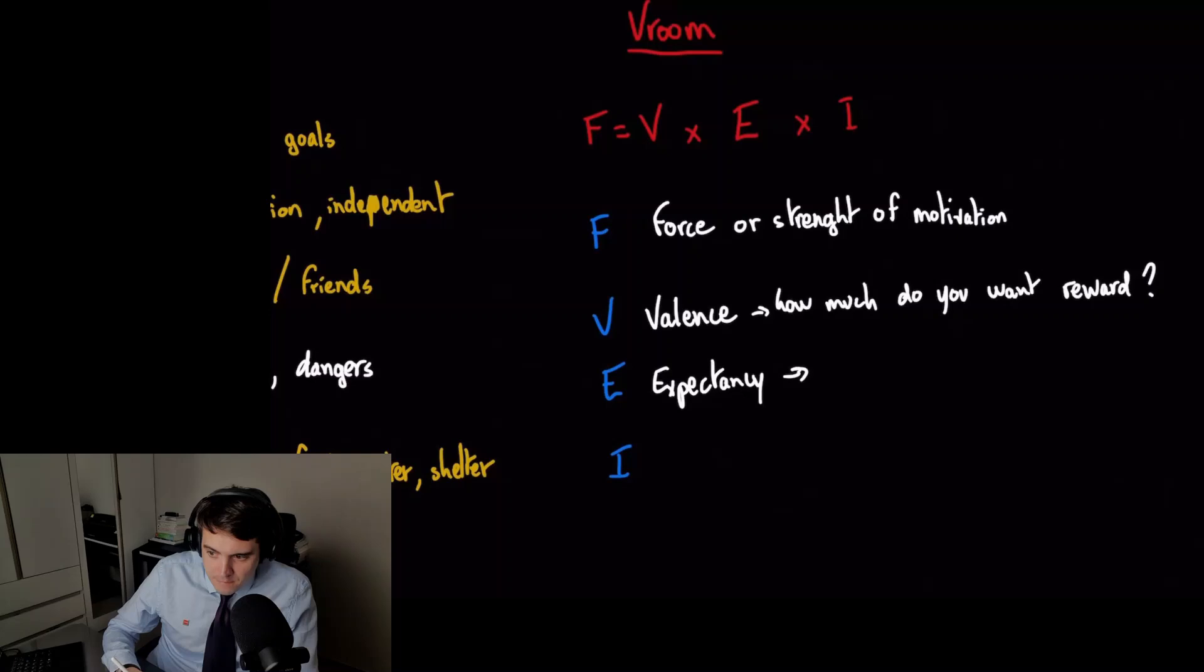So expectancy is like the level of expectation. If you make a lot of sales for the company, you're going to get one million dollars as a bonus. The reward is amazing so the valence is extremely high, but you don't expect it's going to happen. You're not going to make any sales, impossible, so your level of expectation is very low.